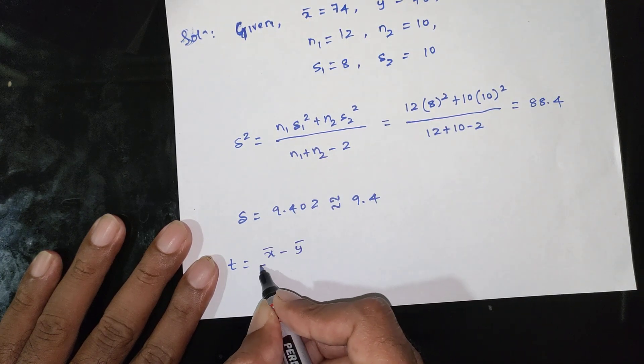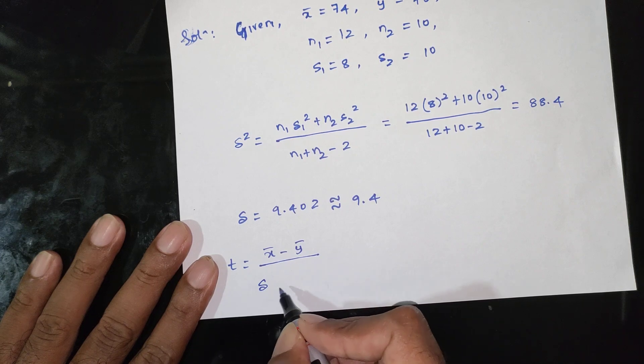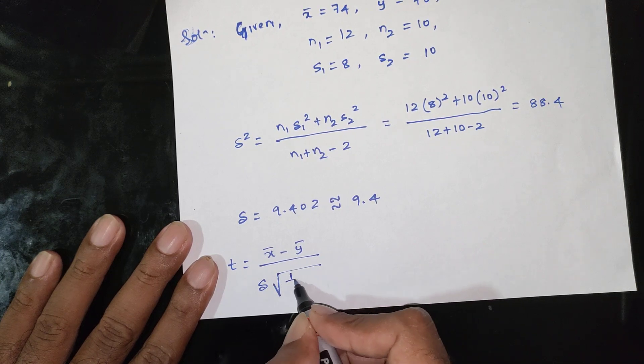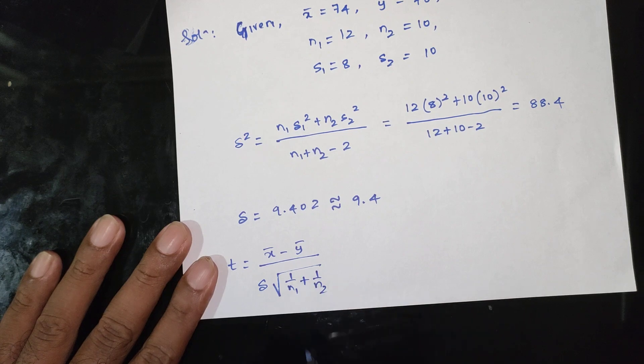t equals x bar minus y bar divided by s into root of 1 by n1 plus 1 by n2.